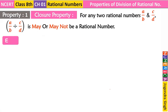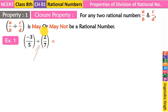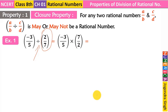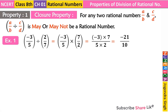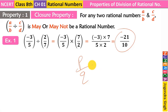For example: minus 3 upon 5 divided by 2 upon 7. As you know, the division sign can be converted into multiplication, and the second number becomes its reciprocal. So minus 3 upon 5 into 7 upon 2. In multiplication, we multiply numerators together and denominators together: minus 3 into 7 upon 5 into 2, which gives minus 21 upon 10. This result is a rational number.